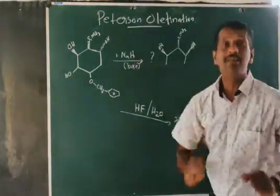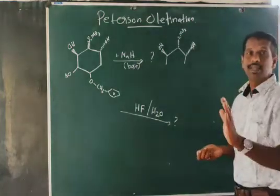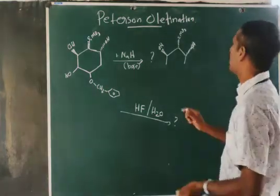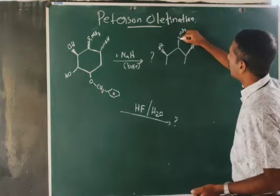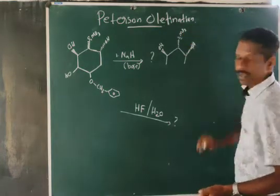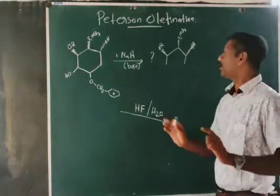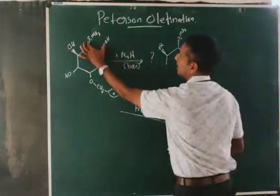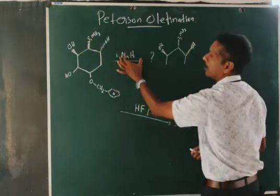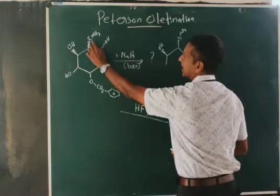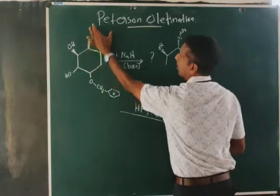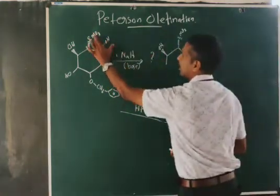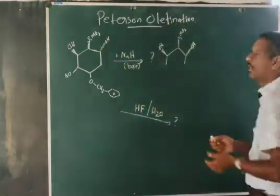For syn elimination, the SiMe3 group and the OH must be on the same plane. Then the vacant d-orbital of Si can interact with the lone pair electrons of oxygen. So for syn elimination, SiMe3 and OH must be at the same plane — these two will undergo elimination reaction when treated with a base. Here you can see that SiMe3 and OH are both above the plane, represented by broken bonds, meaning they are on the same side — these will undergo elimination when treated with a base.